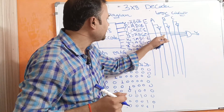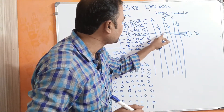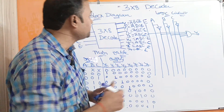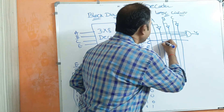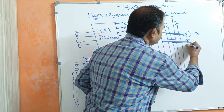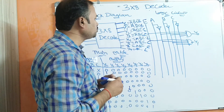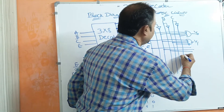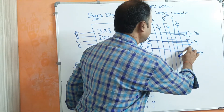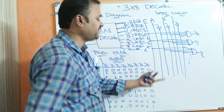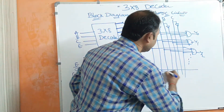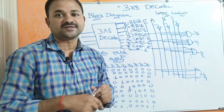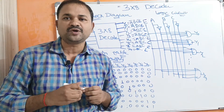If you perform the AND operation on E, A bar, B bar, C bar, then we will get Y0. So likewise Y1 equals E A bar B bar C. Y2 equals E A bar B C bar — so E, A bar, then B and C bar. Likewise we can derive for Y3, Y4, Y5, Y6. And finally Y7 equals E A B C. So this is the logical circuit for the 3x8 decoder.